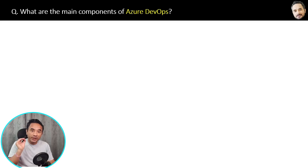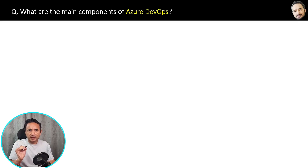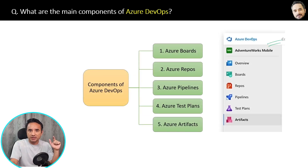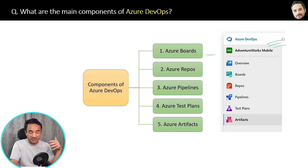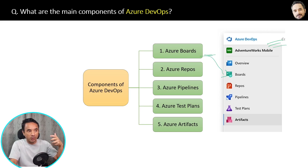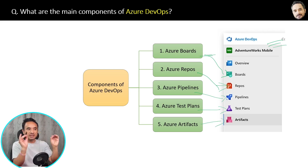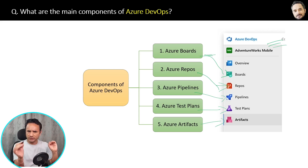Question three: What are the main components of Azure DevOps? When you open your Azure DevOps portal, here is the main menu with the main components that help you develop your application from scratch to deployment in production. We have Azure Boards, then Azure Repos, then Azure Pipelines, Azure Test Plans, and Azure Artifacts. These are the main components of Azure DevOps, which I will explain in detail in further questions.